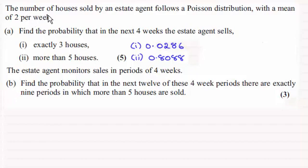Remember we were told that the number of houses sold by an estate agent followed a Poisson distribution with a mean of 2 per week. Now we're being told that the estate agent monitors sales in periods of 4 weeks, and we've got to find the probability that in the next 12 of these 4 week periods there are exactly 9 periods in which more than 5 houses are sold.